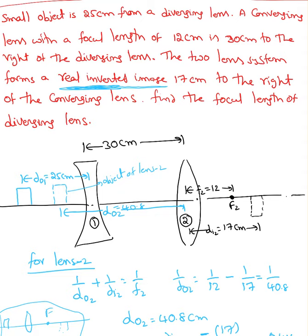I draw this picture based on the description here. The distance between these two diverging and converging lenses is 30 cm, and the converging lens is behind the diverging lens or to the right of the diverging lens.